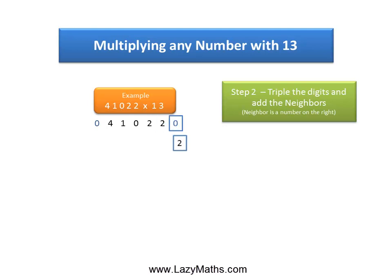Our first pair is 2 and 0. Triple of 2 is 6, plus the neighbor 0 gives us 6.